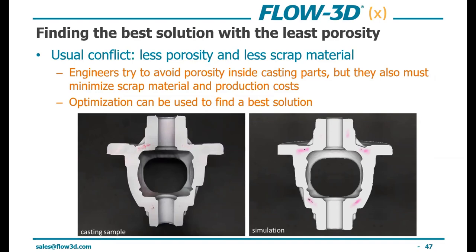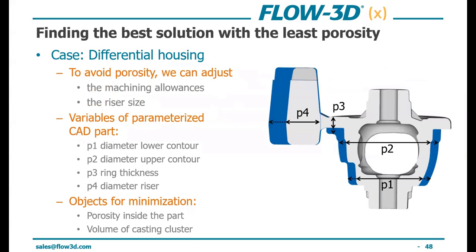With good correlation established, to avoid porosity we identify two variables to adjust: the machining allowance — extra material on the end cast part — and the riser size, which is the amount of material feeding into your casting during solidification. We then set up parameterized CAD variables: P1 and P2 are the upper and lower contours of the casting, P3 is the ring thickness or feeding neck from the riser, and P4 is the riser diameter. Our objectives are to minimize porosity inside the part and minimize the volume of the casting cluster.